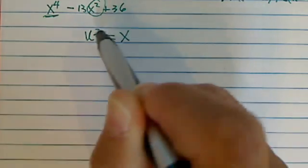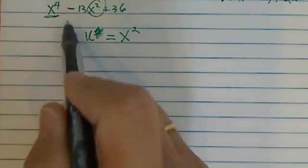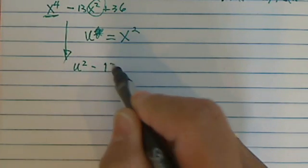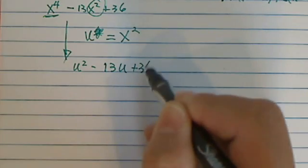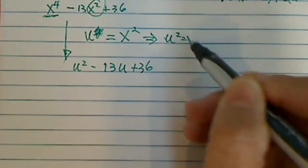Let's have u equal to x². From there, we have this one become a quadratic: u² - 13u + 36. Because from here, I have u² equal to x⁴.